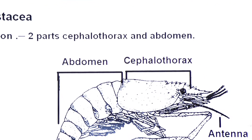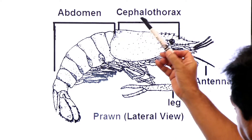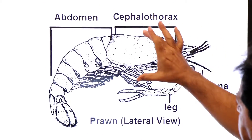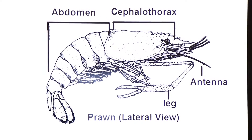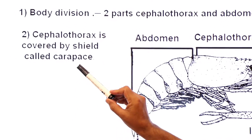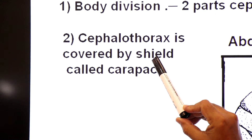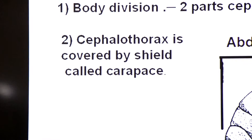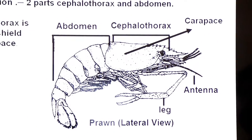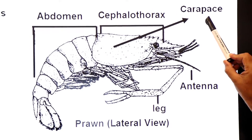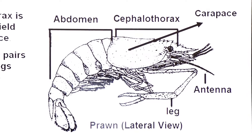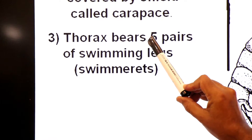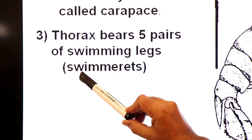The example of class Crustacea is the prawn, an aquatic animal. Looking at the lateral view of the prawn, the two divisions of the body are: the head and thorax, which are fused — this portion is called the cephalothorax — and the second part is the abdomen. The cephalothorax is covered by the carapace, a hard protective, calcified layer. The thorax bears five pairs of swimming legs known as swimmerets.